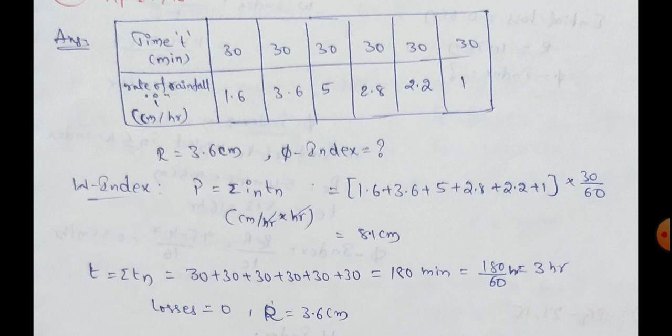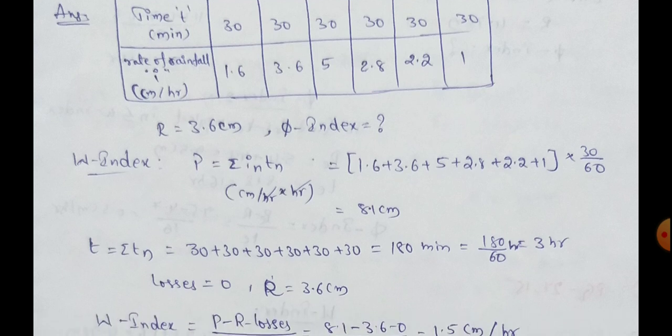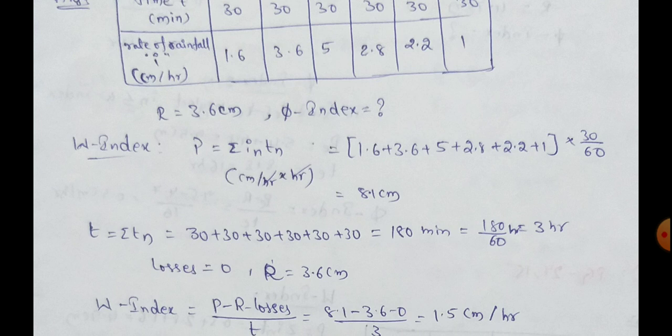This means 1.6 cm per hour, 3.6, 5 cm per hour, 2.8, 2.2, 1 cm per hour. So, in every successive 30 minutes, we have the intensity of rainfall. Next, we have R value. R equal to runoff equal to 3.6 cm. We will find out the pi index value. So, this is the problem.